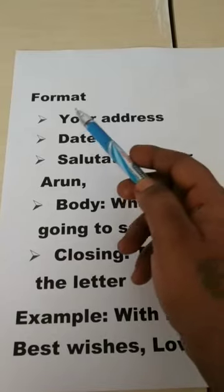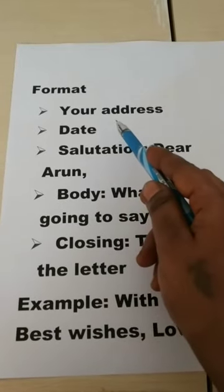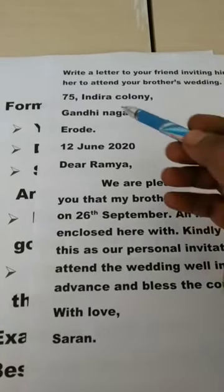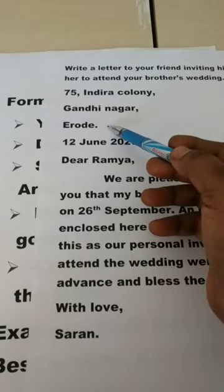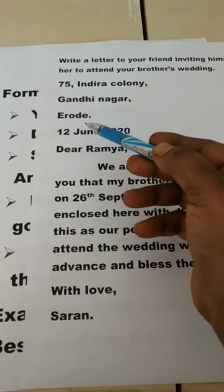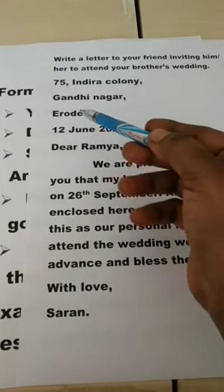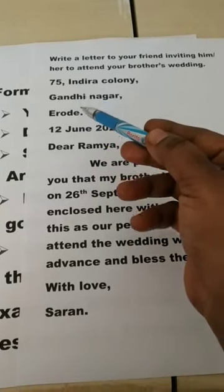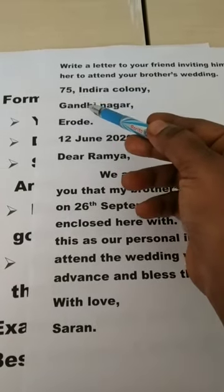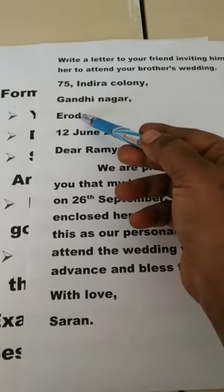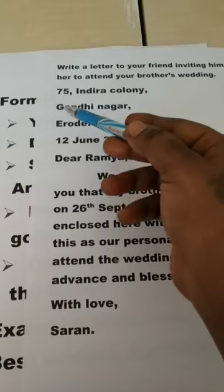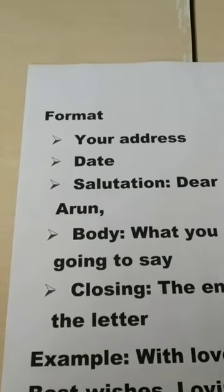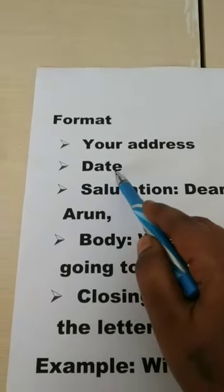Let's see the format. First, you have to write your address. Write the address on the left-hand side of the page at the very top. The address should be accurate and complete. Next, you have to write the date just below the address.